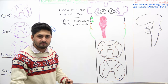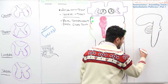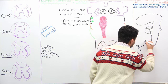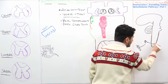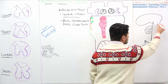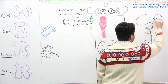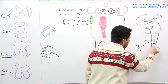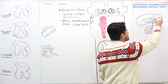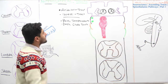These anterolateral tracts carry electrical impulses from the body through free nerve endings, to the dorsal root ganglia, then to the spinal cord, traveling up through the medulla, pons, midbrain, and ultimately to the thalamus where third-order neurons are found, and then radiating to the cortex. That is why we call this the spinothalamic system or spinothalamic tract.